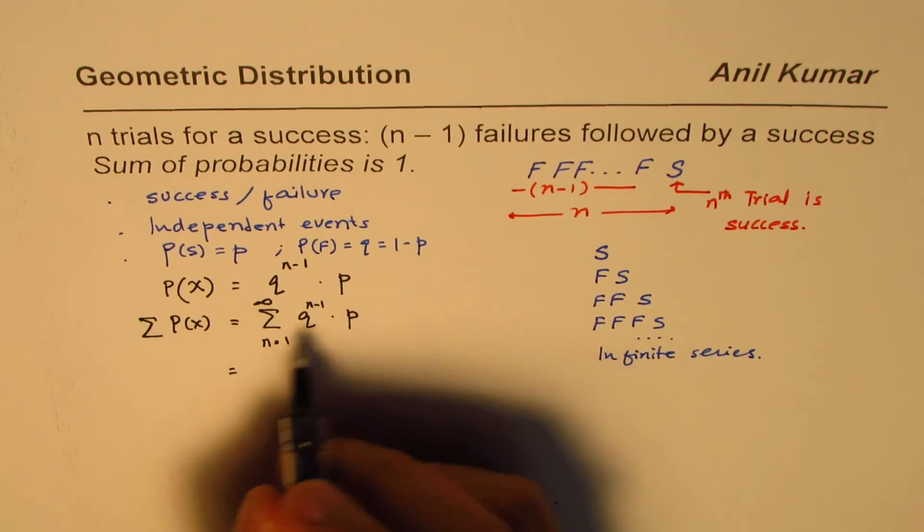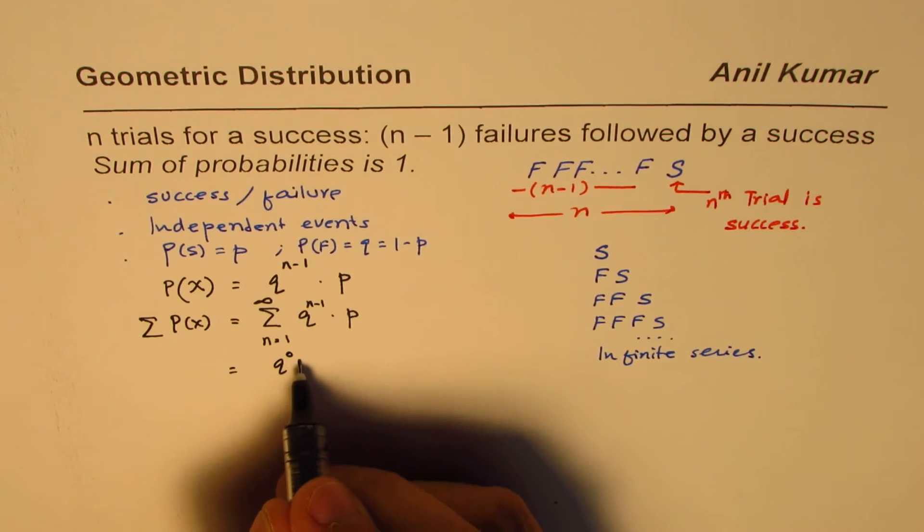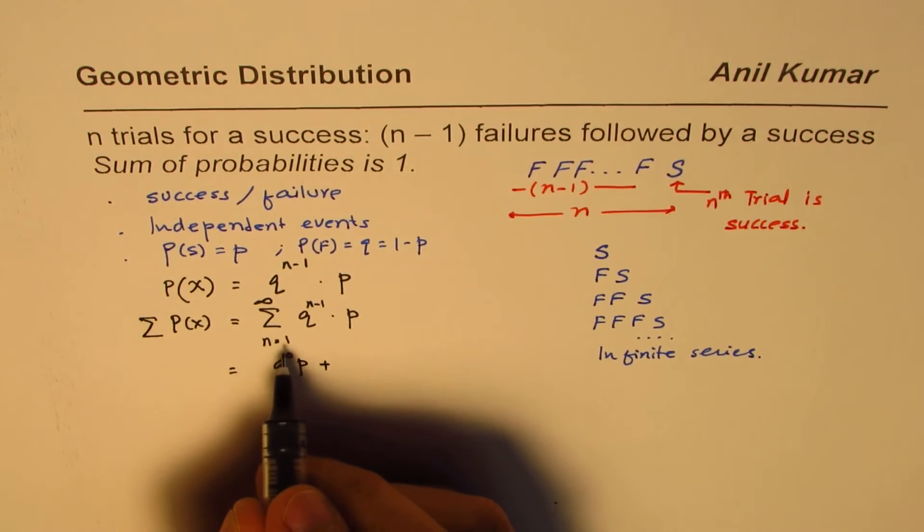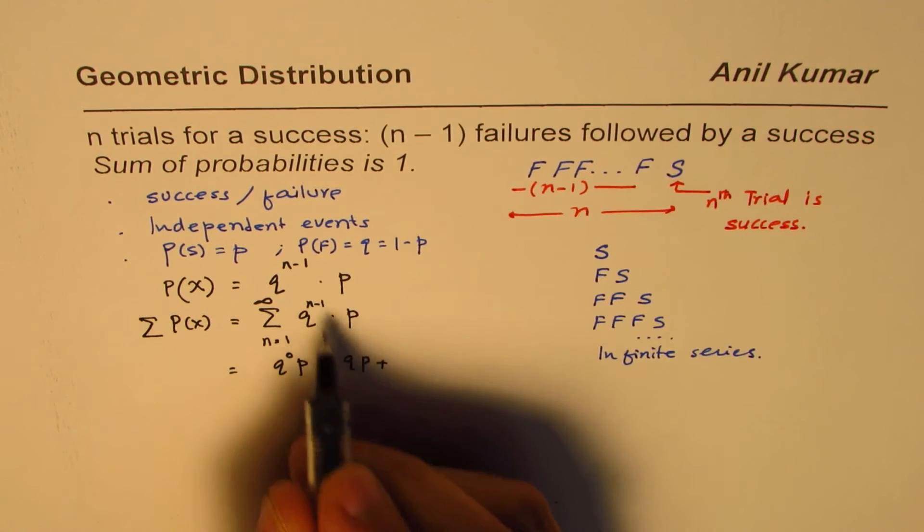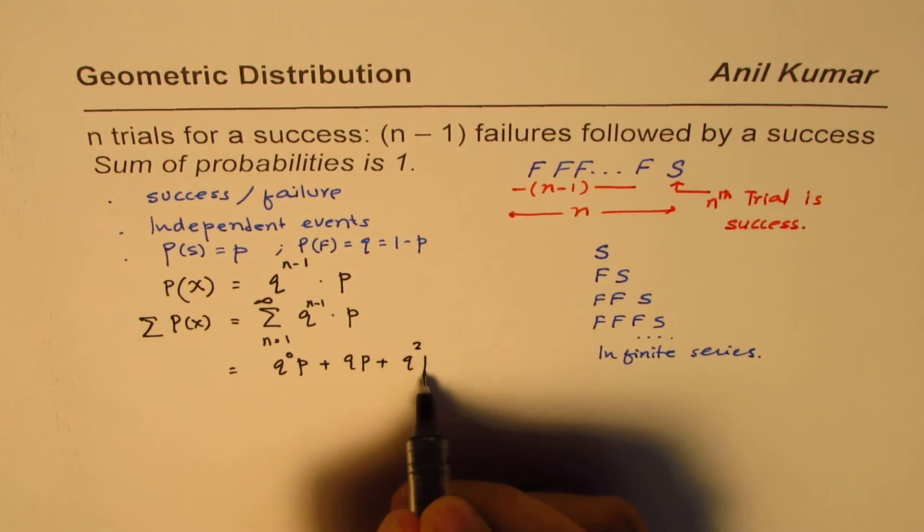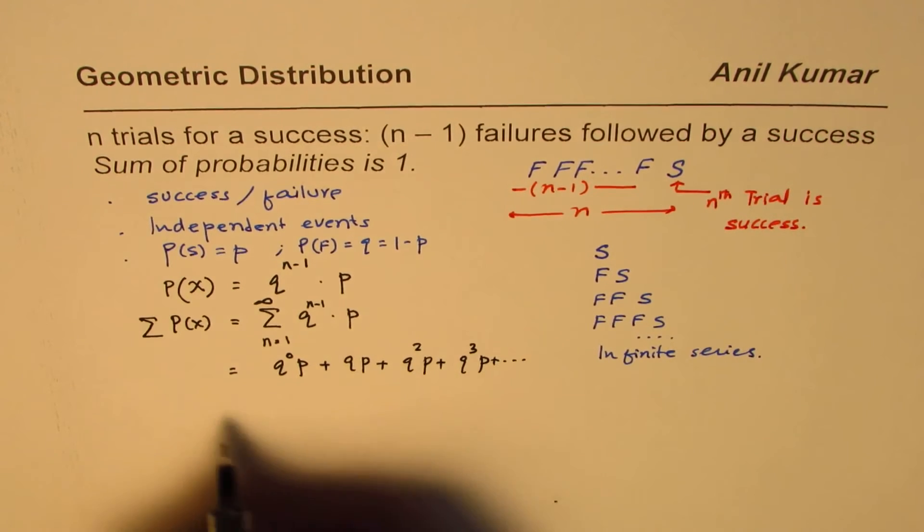Now, let me expand this. If I substitute n as 1, I get q to the power of 0, p, plus n as 2. So we get q times p, if n is 3, q square p, n is 4, q cube p, and so on.